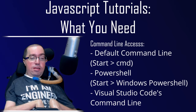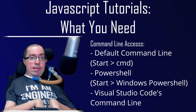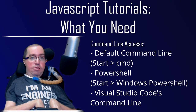The next thing you will need is access to the command line in one form or another. This can be either through the default command line, which you can reach by clicking Start on your computer and then typing in CMD. Another option would be PowerShell, which you can get to by clicking Start and typing in PowerShell or Windows PowerShell. You can also use the command line that comes directly within Visual Studio Code. Any of these options will work and we will explore all of them throughout these videos.